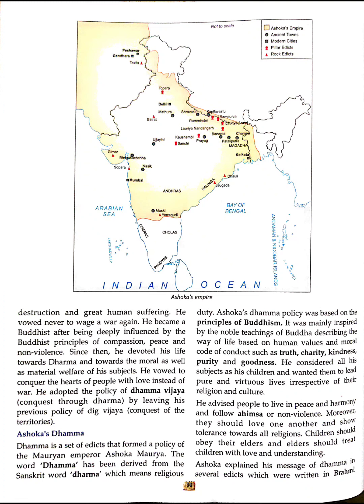Dhamma is a set of ethics that forms the policy of the Maurian Empire under Ashoka Maurya. The word Dhamma has been derived from the Sanskrit word Dharma, which means religion and duty. Ashoka's Dhamma policy was based on the principles of Buddhism, mainly inspired by the noble teachings of the Buddha, describing a way of life based on human values and moral conduct.